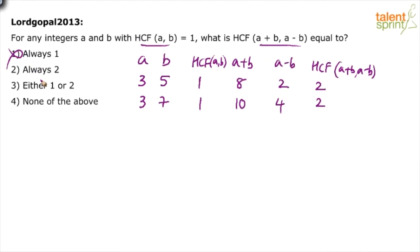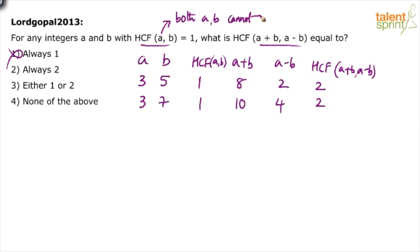We are getting 2 again, but can we conclude it is always 2? Not immediately. In these two cases we considered both odd numbers. One important point: when the HCF of a and b is 1, either both a and b are odd, or one is odd and the other is even. Both cannot be even.